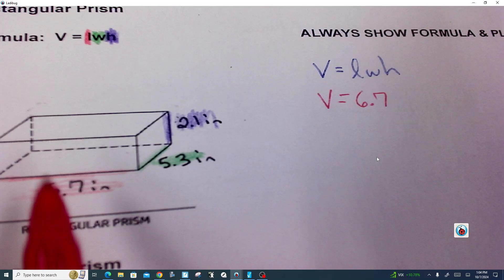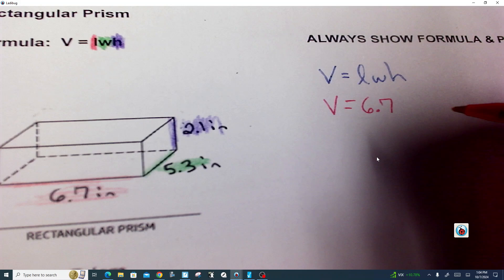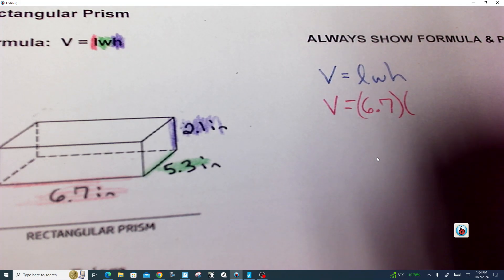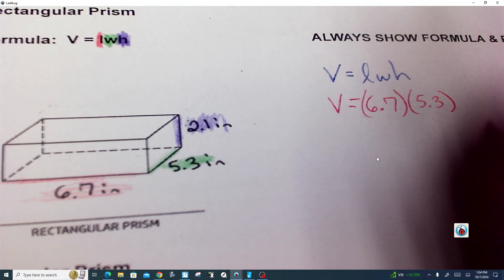You agree that the length is 6.7, so we're going to put that one in. How about we put it in parentheses. What did you say the width was again? 5.3. And what was the height?